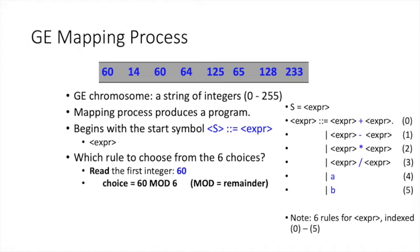The mod operator is available in any programming language, including R. If you divide an integer by another integer, the mod operator produces the remainder. So if you divide 60 by 6, the remainder is 0 — 60 mod 6 produces 0. As a result, we pick rule number 0 from the available choices. When we mod with 6, it will always produce a number between 0 and 5, so we are always able to produce a valid rule index. Rule number 0 is expra plus another expra.